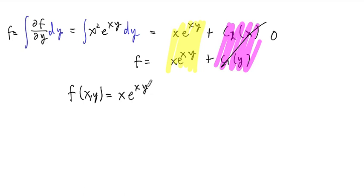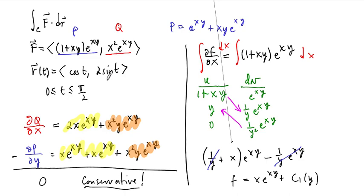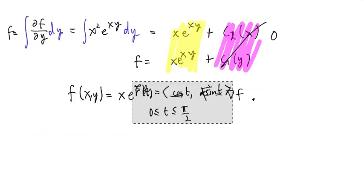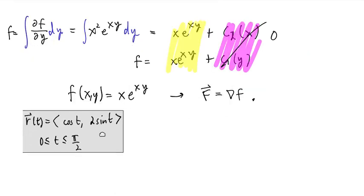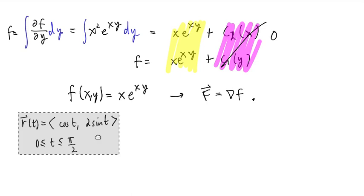Now, how are we going to use this? This means our vector field F equals the gradient of x·e^(xy). We want to apply the fundamental theorem of path integrals, which says we only need to plug in the boundary points of our curve. The next step is to find those boundary points — the only two points we have to plug into our potential function to evaluate the integral.